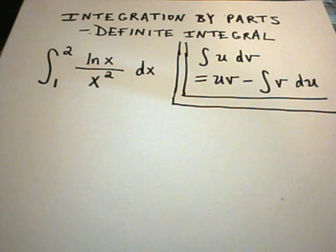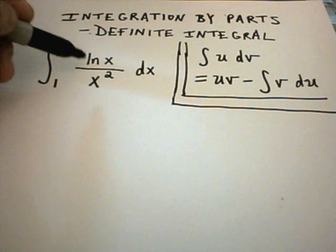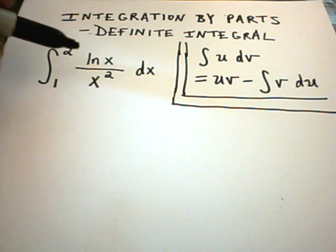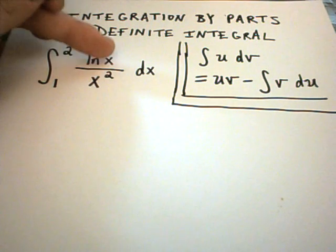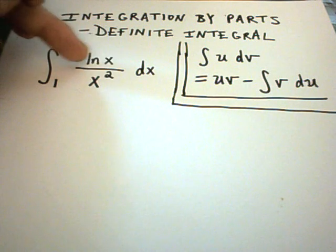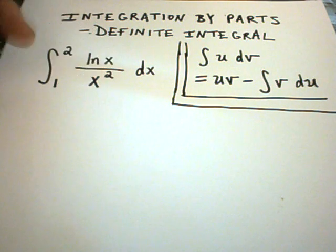Okay, so in this problem, I see an ln of x, and you have to be careful, kind of visually looking at it, you see an x squared, but really this is 1 over x squared. So we'll have to pick u to either be ln of x, or we'll have to pick u to be 1 over x squared.